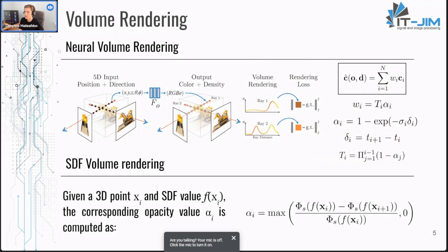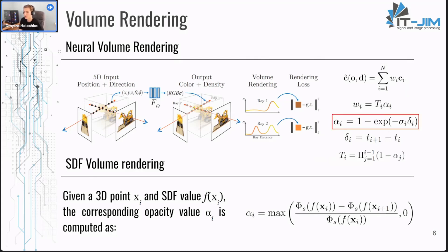NeRFs represent the scene as volume density and color fields, and given a set of points sampled along a ray direction, the rendered color is calculated using a Riemann sum — that's the formula in the black box. In simpler terms, the rendered color is a weighted sum of colors predicted along the ray direction, and the weights depend on the opacity, which in turn depends on the predicted density. In our case we have no density values; instead we have SDF values, which are distances to the surface.